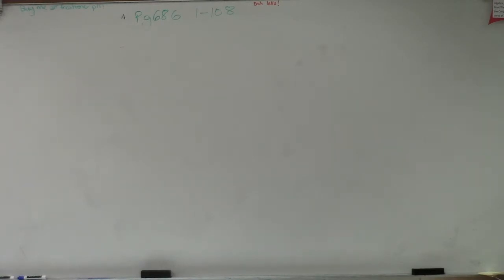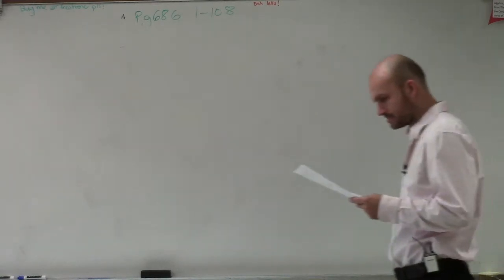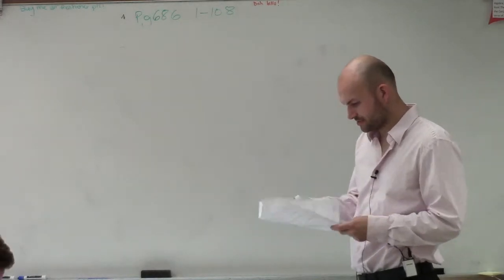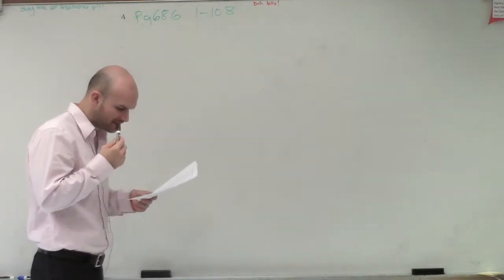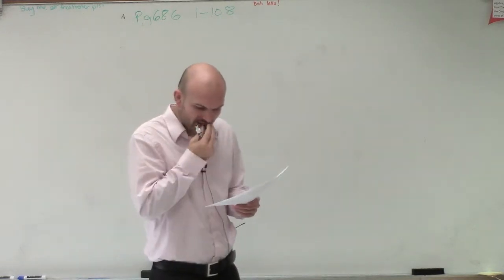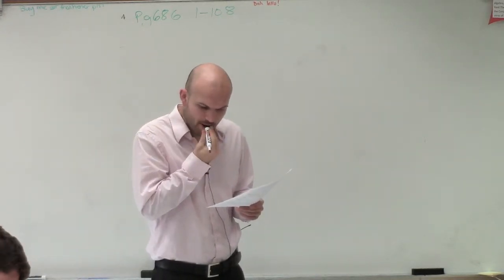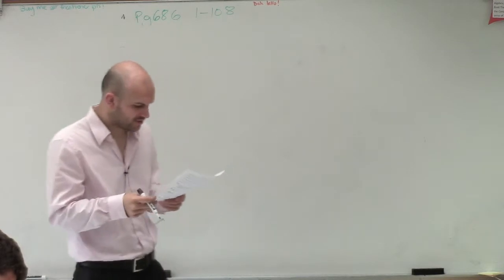So the first problem you guys asked me to do is number 27. That's the lowest number, so we'll do that first. Number 27 says, determine the equation of the parabola in standard form given the vertex at negative 2, 5 and a solution point at negative 3, 2.